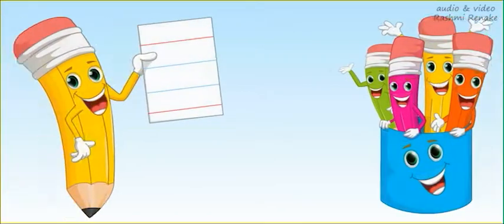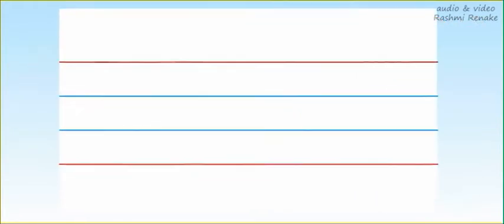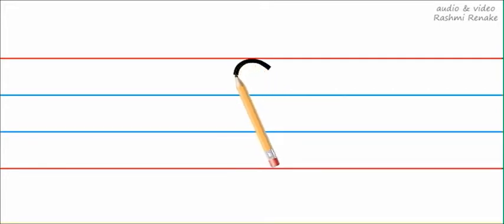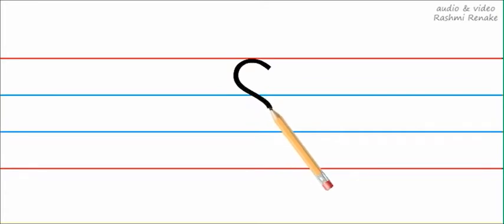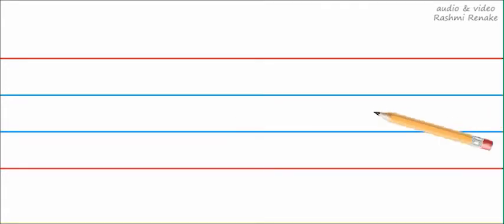Hey kids, today we are going to learn how to write capital letter S on four lines. We will start from the top red line, make a small right curve till the first blue line, then a little slant line, and then make a left curve till the second blue line.